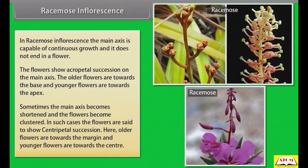Sometimes the main axis becomes shortened and the flowers become clustered. In such cases the flowers are said to show centripetal succession. Here older flowers are towards the margin and younger flowers are towards the center.